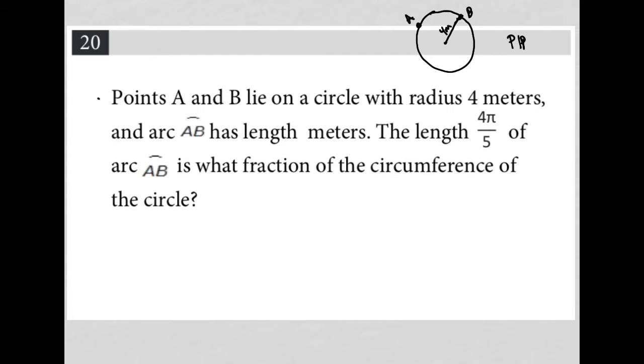So we have arc AB has length 4π over 5 meters. So we know this arc has a length 4π over 5 meters. So the length 4π over 5 of arc AB, I'm going to label that. So this length is 4π over 5. What fraction of the circumference of the circle?